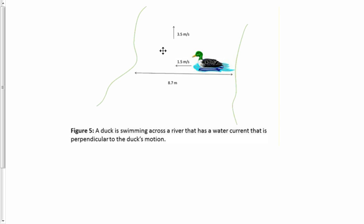All along the way, there's a water velocity of 3.5 meters per second going to the north. Now to the duck, his velocity looks like it's just going across the river. But relative to a person on the shore, they're going to observe both the x direction and the y direction, and it's going to look like this.